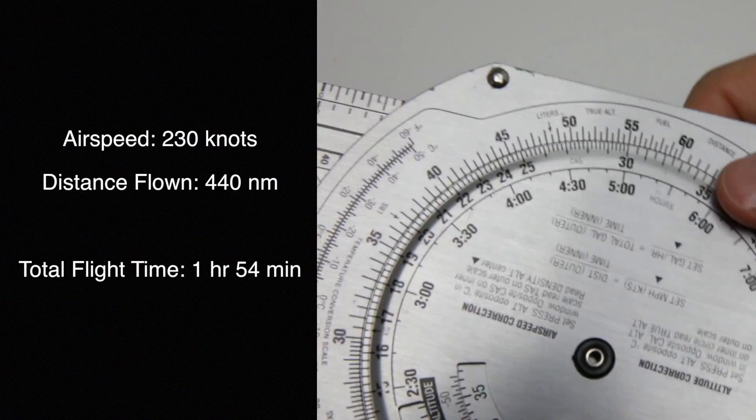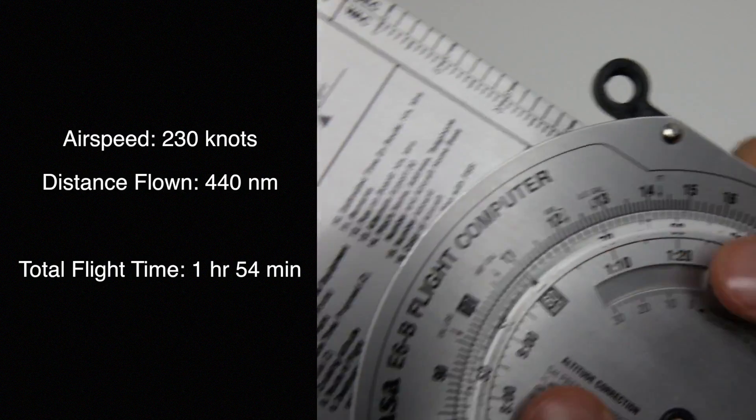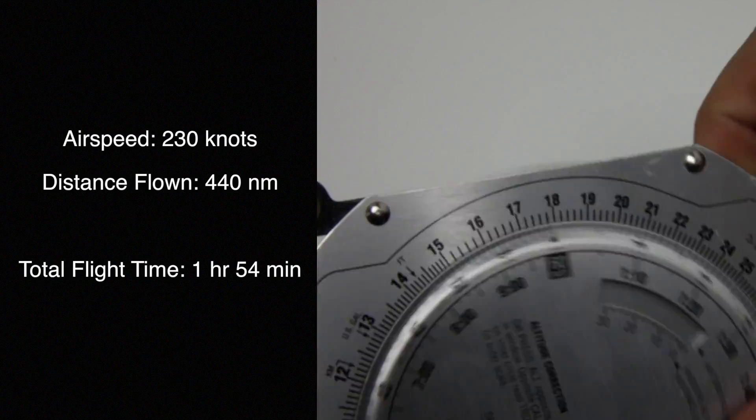Another example: we're going to be going 230 knots, so again we rotate and set the rate to 230.